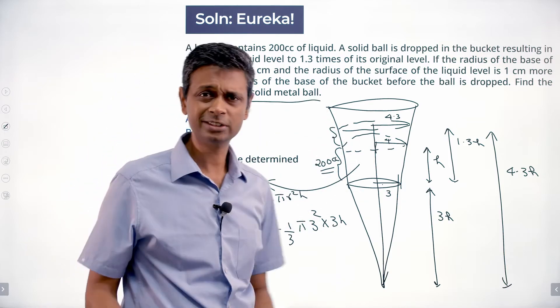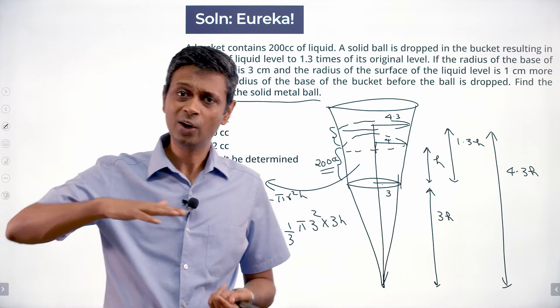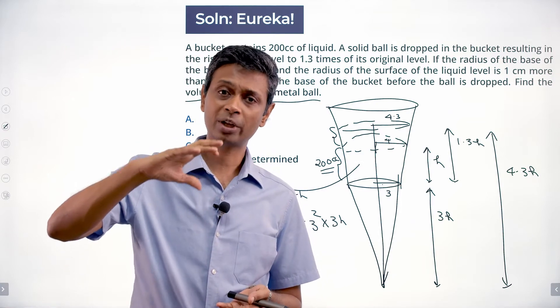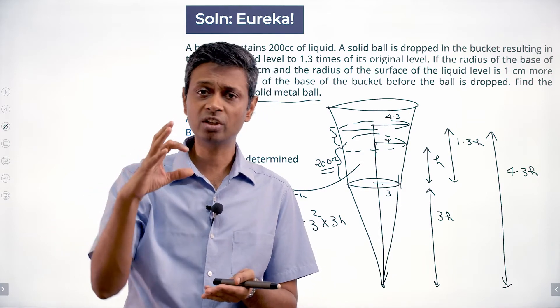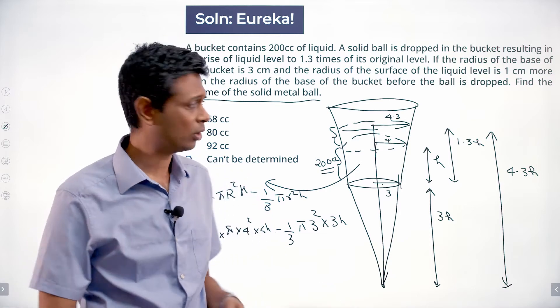What will be the smaller frustum that we are interested in? Find the volume of the solid metal ball. This is Archimedes principle: eureka! Volume of the ball is volume of the water displaced, the extent to which the water level has risen. That volume is the volume of the ball.